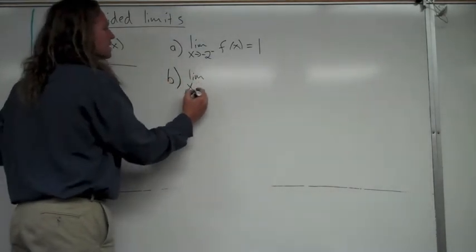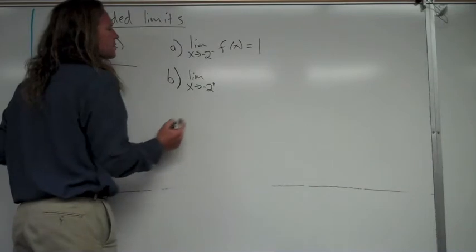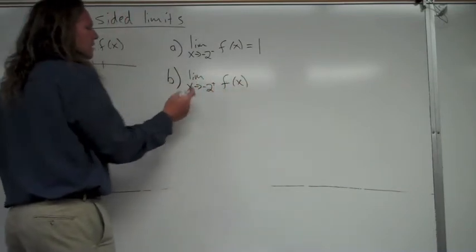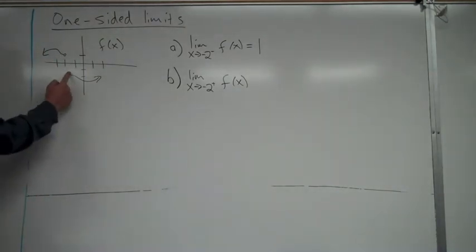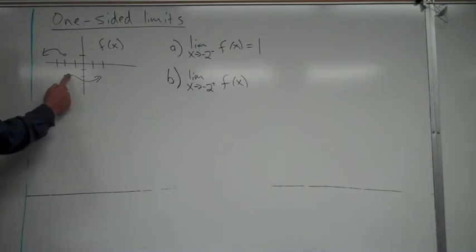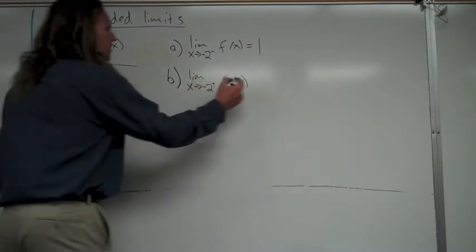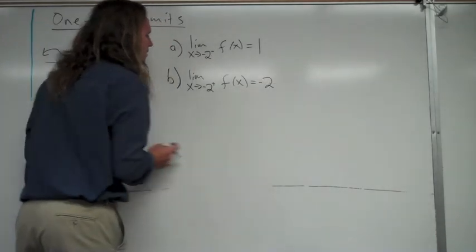Now let's look from the right-hand side. For the notation, you just put a little plus instead of a minus in the corner. This is read as the limit as x approaches negative 2 from the right of f of x. I'll go just to the right of negative 2 and bring my finger in closer. It looks like the y-value is approaching negative 2. So that right-hand limit is negative 2.